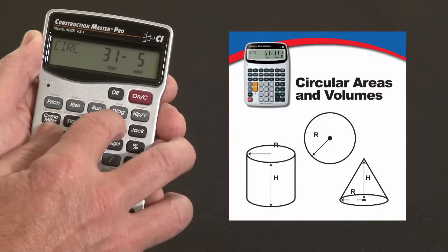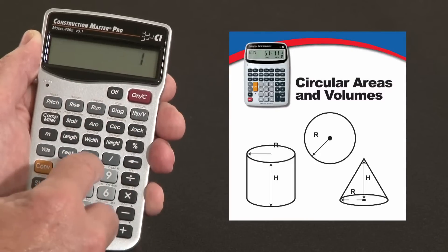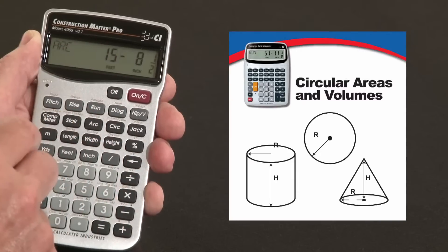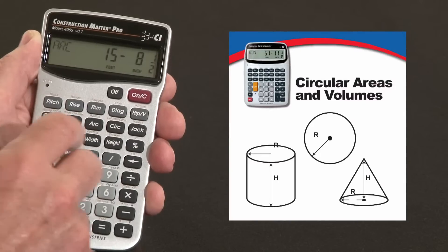And the circumference of the whole circle is 31.5, but I only want half of that. I want 180 degrees let's say. 180 is my arc length, 180 degrees. Press it again, the arc length is 15 feet 8.5 inches around it.